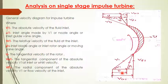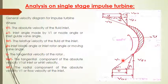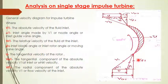U represents the tangential velocity of the rotor. Vu1 is the tangential component of the absolute velocity at inlet. Vf1 is the radial component of the absolute velocity V1, and Vf1 can also be called the flow velocity at inlet. These definitions apply at inlet, and similarly the same terms apply at outlet.